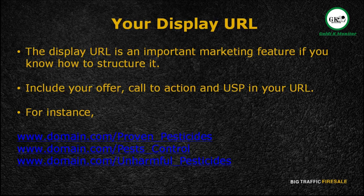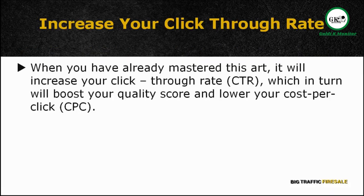For example, using the pesticides context: www.domain.com/ProvenPesticides, www.domain.com/PestControl, or www.domain.com/UnharmfulPesticides. When you have mastered this art, it will increase your click-through rate, or CTR, which in turn will boost your quality score and lower your cost per click, or CPC. Think of it this way — great ads will minimize your cost, while lousy ads will only add to it.